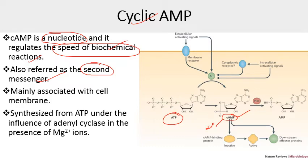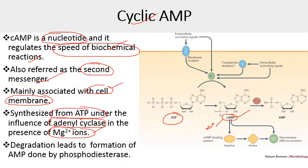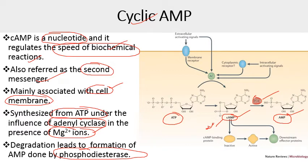Cyclic AMP is synthesized from ATP under the influence of adenylyl cyclase and also requires the presence of magnesium ions. It is mainly associated with the cell membrane. Its degradation produces adenosine monophosphate, and the enzyme required for this is phosphodiesterase. As discussed in the last lecture on the lac operon, catabolite repression involves cyclic AMP: if the amount of glucose is high, cyclic AMP is very low; if cyclic AMP is very high, glucose is very less in the cell. Cyclic AMP is also involved in glycogenesis — the formation of glycogen in the cell.